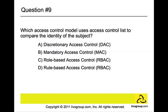Question number nine: which access control model uses an access control list to compare the identity of the subject? The answer is discretionary access control. In discretionary access control, you have an access control list, a capability system, and file and data ownership. These are the key things associated with discretionary access control, so keep this in mind when studying for your CISSP exam.